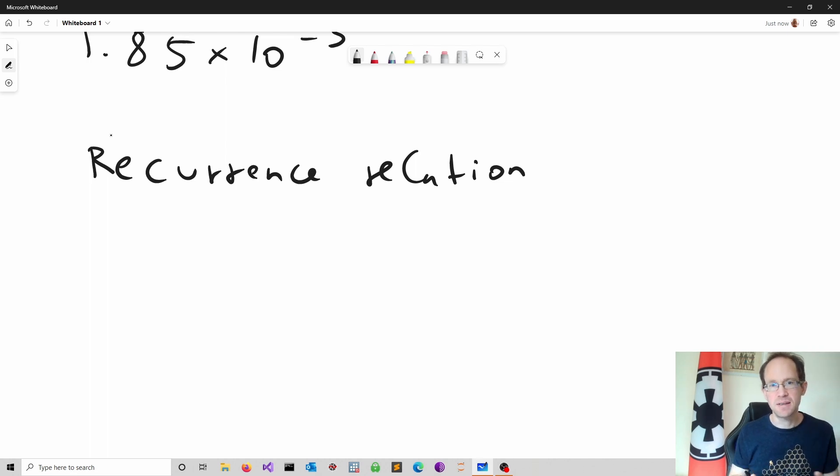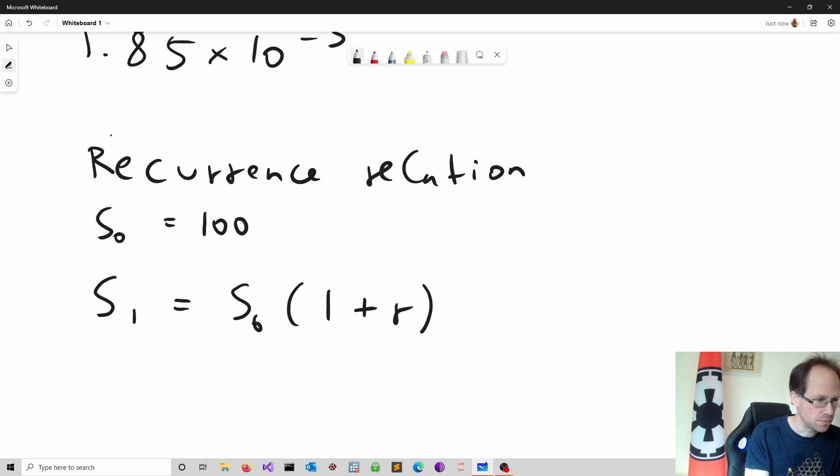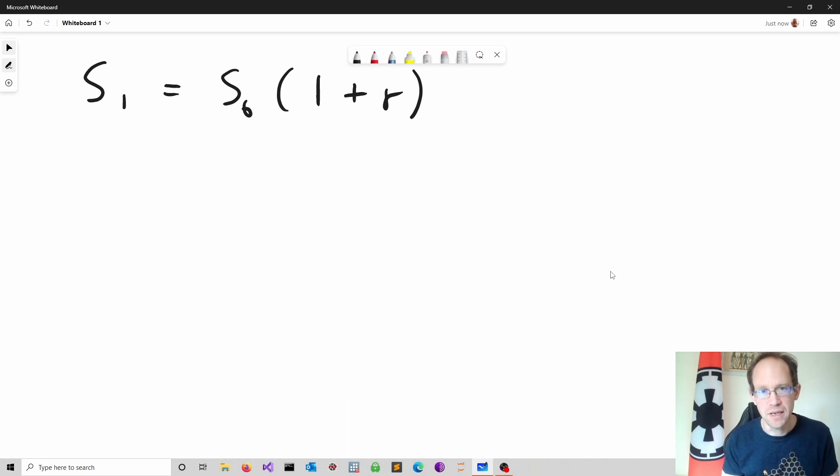Let's start with an example. You have savings of S0 equal to 100 at point in time T equal to 0. The interest rate is denoted R. The following recurrence relation shows the value of savings at point in time T equal to 1. So it's S1, S0, S0 times 1 plus R.